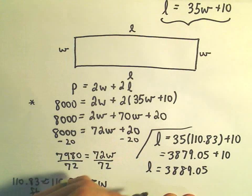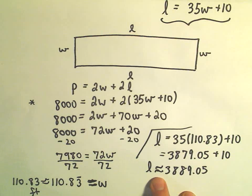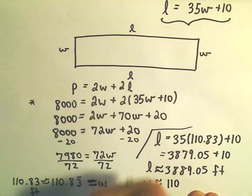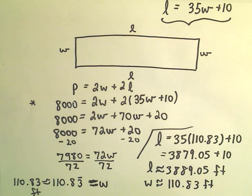So the length is roughly equal to, I'll put my little curvy equal sign that says approximately equal to, the length is roughly equal to 3889.05 feet. And the width was roughly equal to 110.83 feet. And now we know the dimensions. We now know the length and the width.